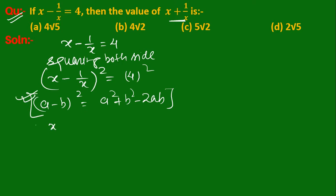So x whole square plus (1 upon x) whole square minus 2 into x into 1 upon x is equal to 16. This implies that x square plus 1 upon x square, the x's cancel, so equals 16 plus 2.